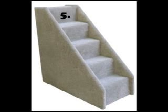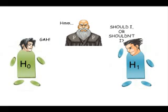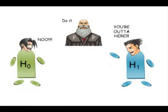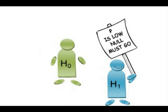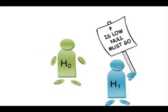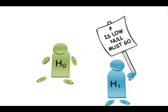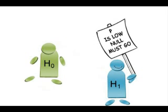Step 5: Use the p-value to decide whether to reject the null hypothesis. If the p-value is less than the alpha value you chose earlier, you will reject the null hypothesis. The sample has given you evidence that the null hypothesis is wrong.